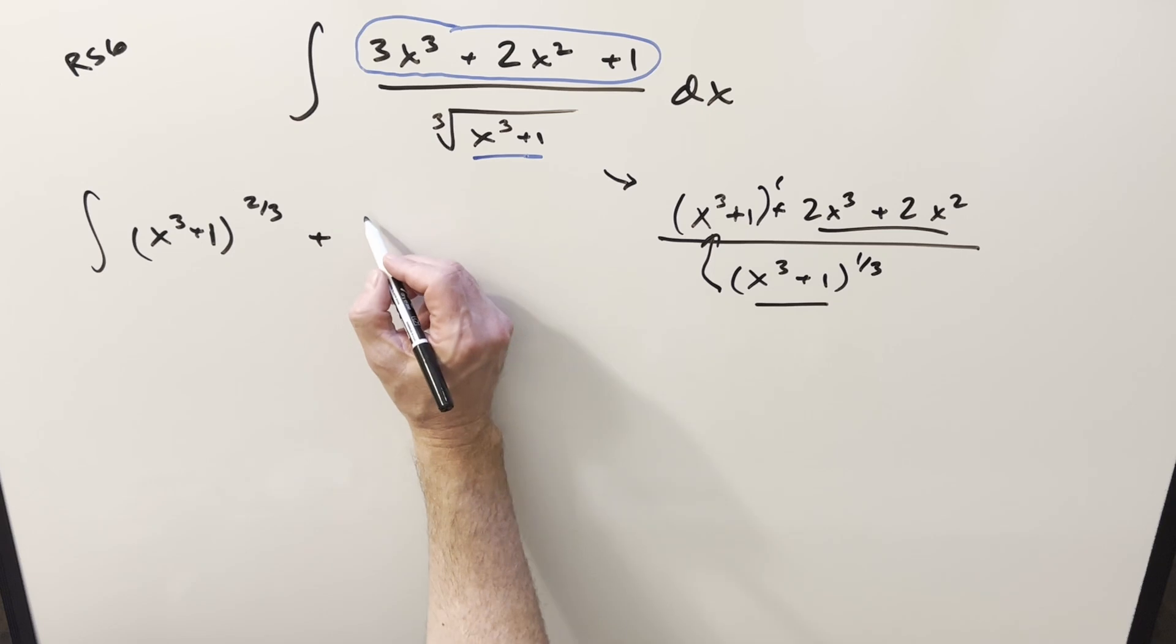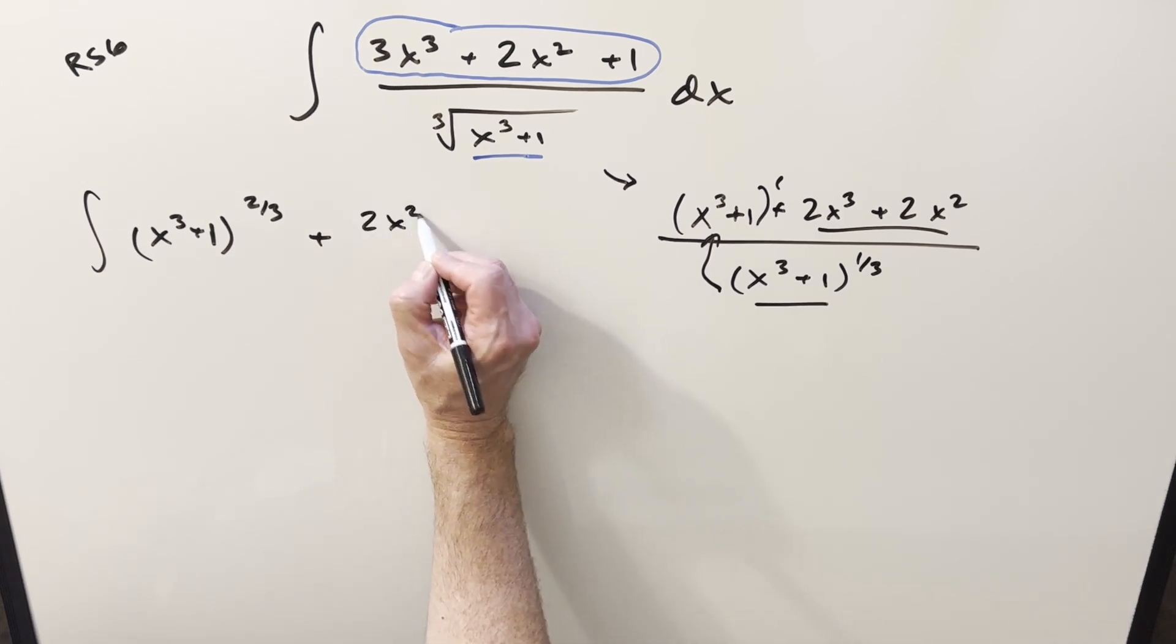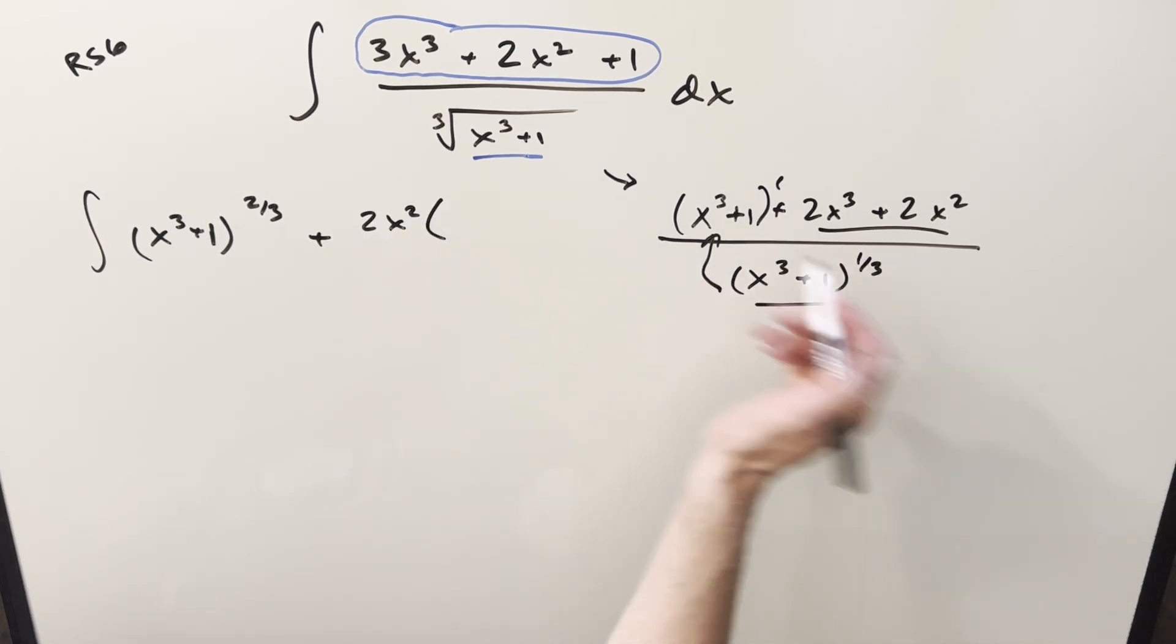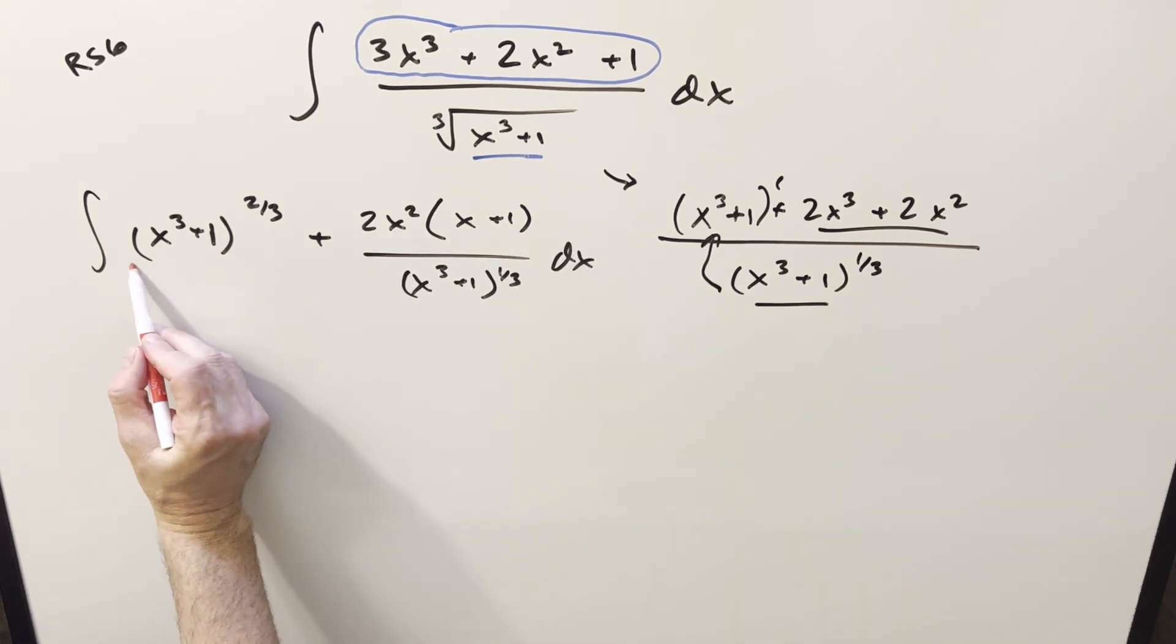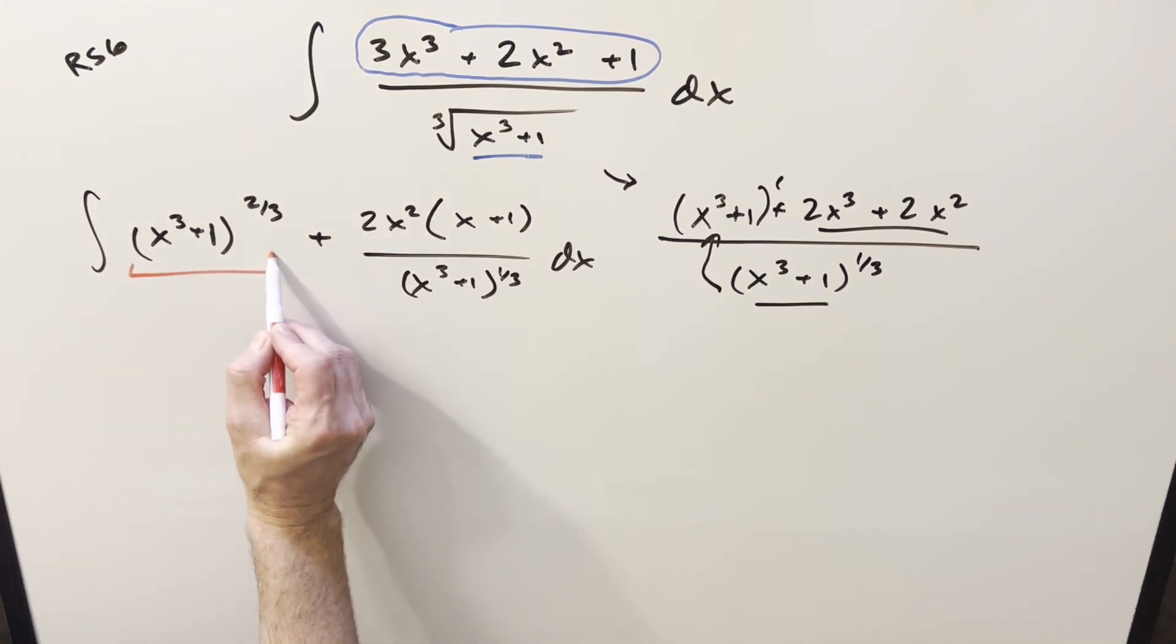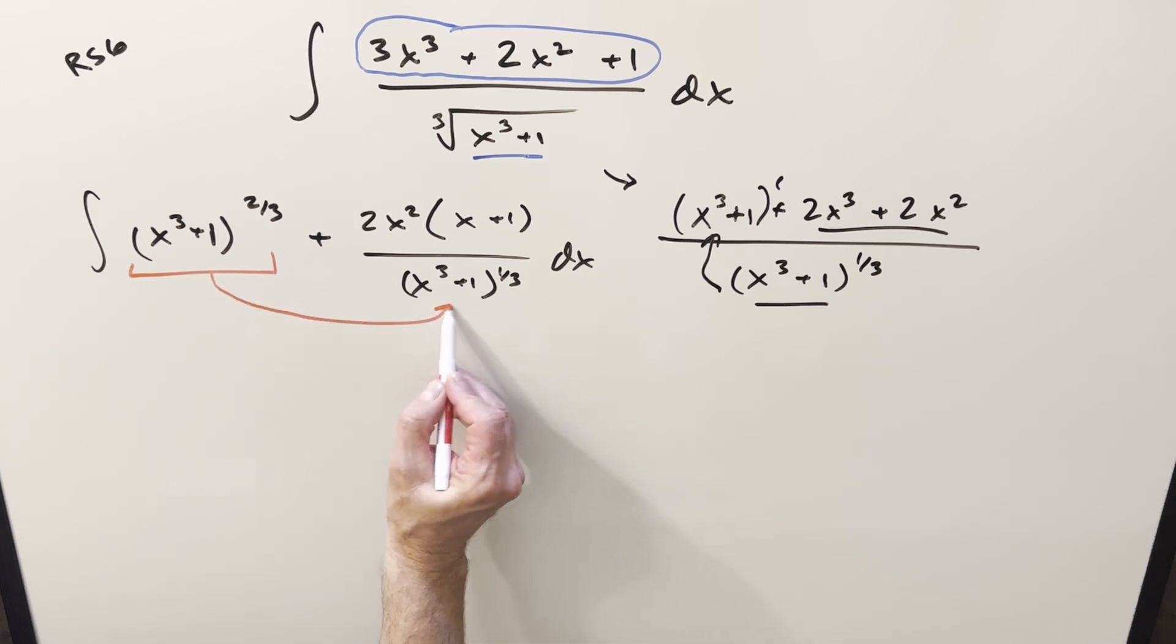For this here, I can factor out 2x squared, so we can end up with 2x squared. And then what's left is going to be x plus 1 all over this thing. But the thing I notice here is, if we take the derivative of just this piece right here, it's going to be something, it's going to have at least this part right here.